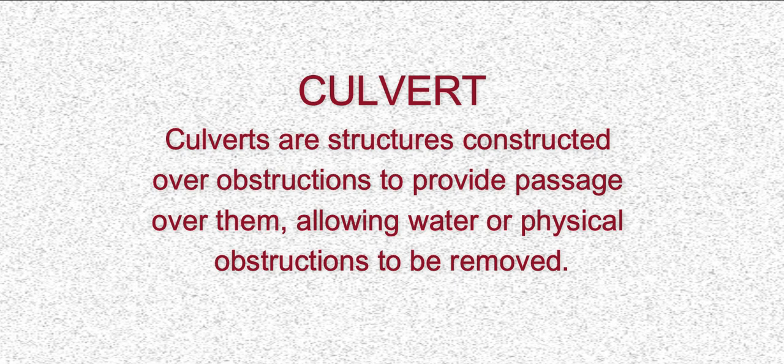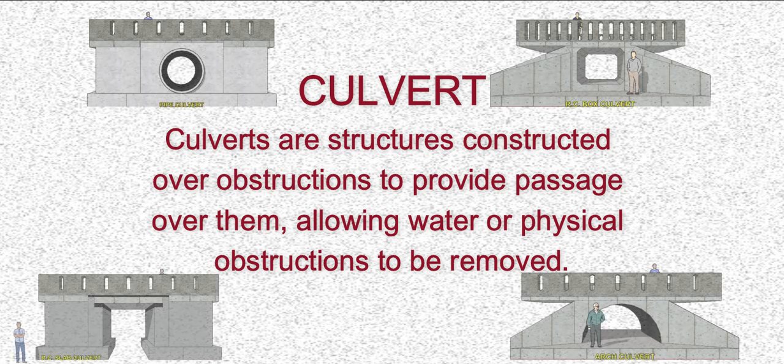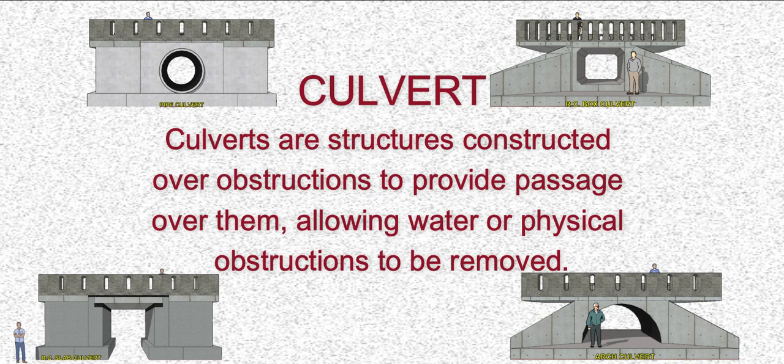A culvert is a tunnel that carries a stream underneath a highway or railway. It serves as a bridge for vehicles to cross and is often found in natural water flows. Culverts come in a variety of conventional forms, such as pipe, box, and arch culverts.